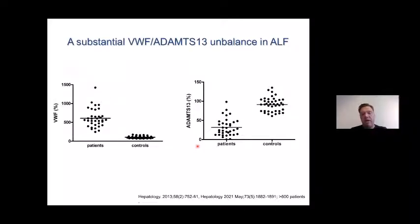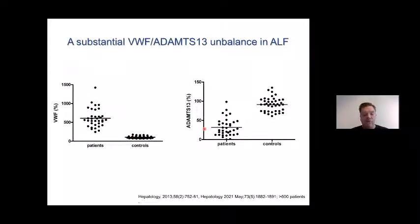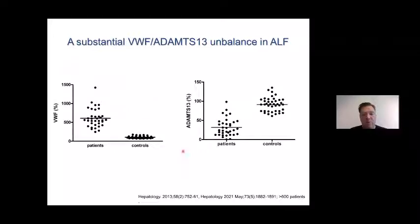We then went on to study hemostasis in more detail — the separate parts: platelets, coagulation, and clot breakdown. Von Willebrand factor is highly elevated in patients with ALF compared to controls, and ADAMTS13, which regulates von Willebrand factor reactivity, is much lower in these patients. This was confirmed in a cohort of more than 600 patients from the U.S. Acute Liver Failure Study Group with identical results. This von Willebrand factor / ADAMTS13 imbalance is highly pro-thrombotic and, we speculate, in part compensates for the lower platelet count.